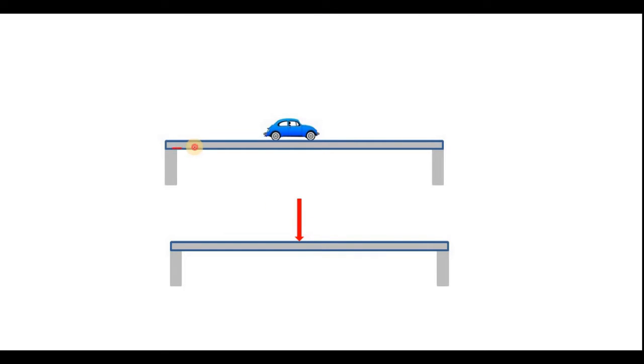So consider this is the bridge. These are two supports. This is one support and this is another support. Now this is your car. Now whenever your car is here, that means you are applying a load.